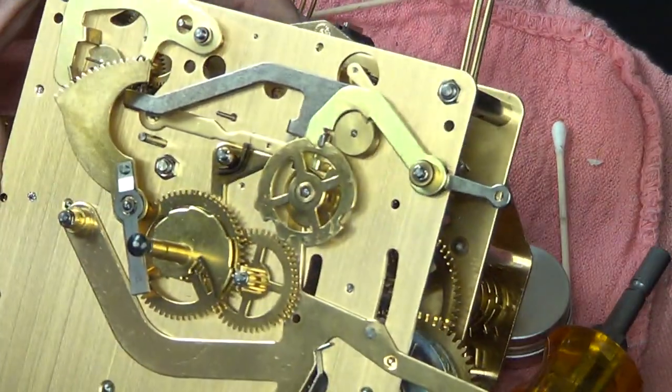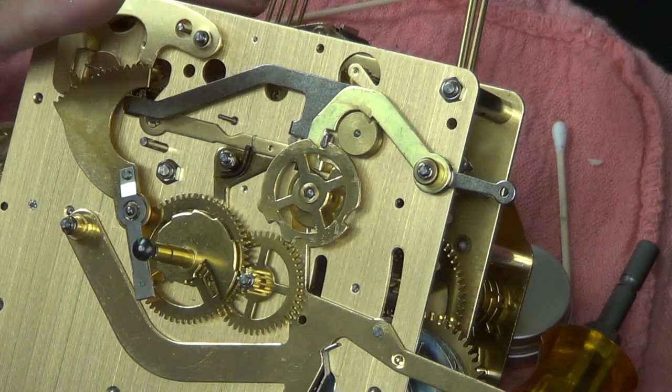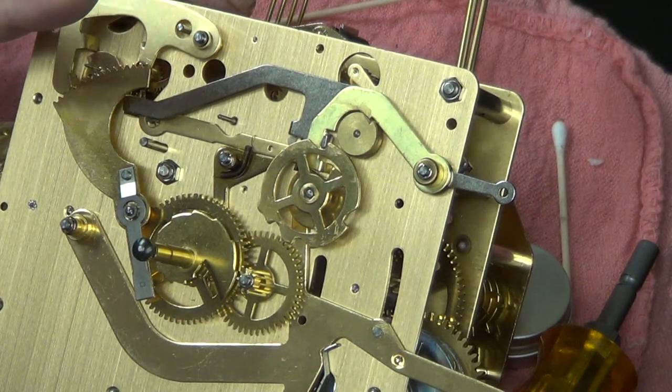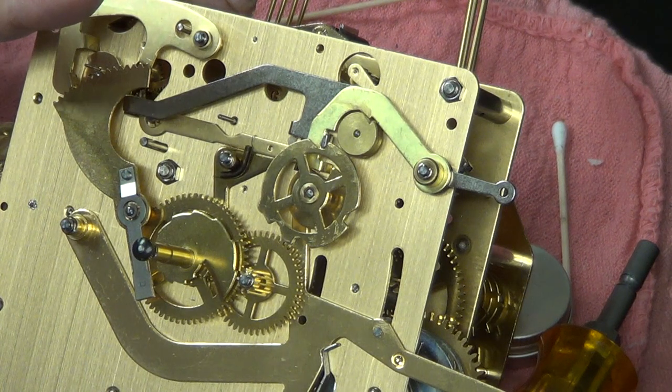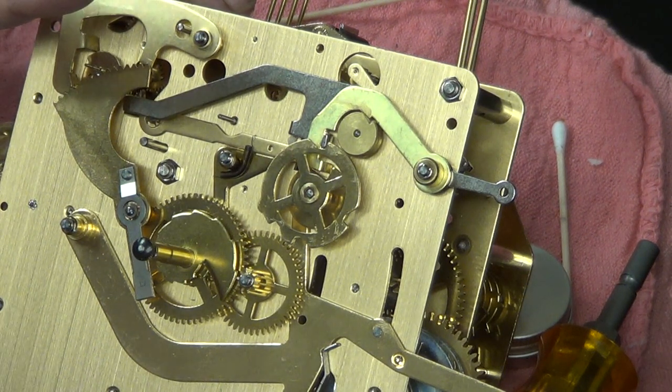See if we can get this in here a little bit closer. First off we're just gonna wiggle these gears so you can see the actual end shake here. Now I can see that there is oil.